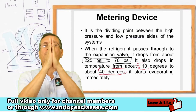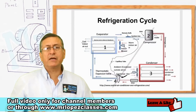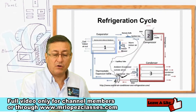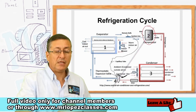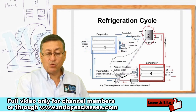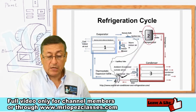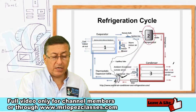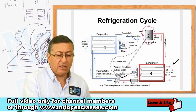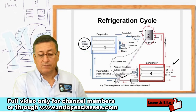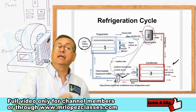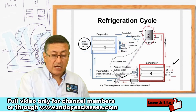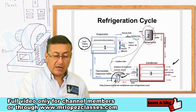The compressor is the center of the system — remember that. We have two coils: one external coil outside and one indoor coil inside. And we have the expansion valve here as well.